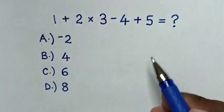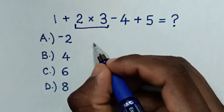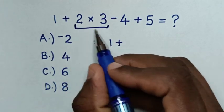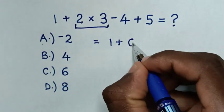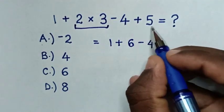So, from this expression, we'll start to deal with multiplication. Then, it will be equal to 1 plus 2 times 3 is 6. Then, minus 4. Then, plus 5.